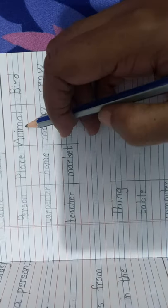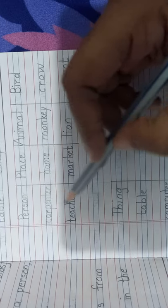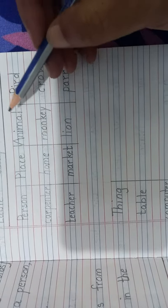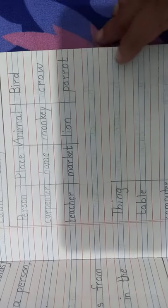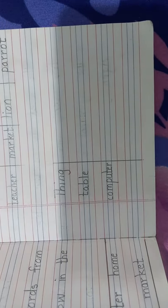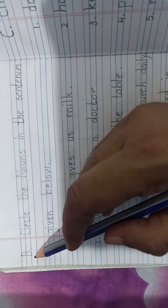Now let's read the column, children. Person. Place. Animal. Bird. And thing. Person. Carpenter. Teacher. Place. Home. Market. Animal. Monkey. Lion. Bird. Crow. Parrot. Thing. Table. Computer. Very good. Now we will move on to the next activity. On the next page, neatly write B, capital B in the margin.